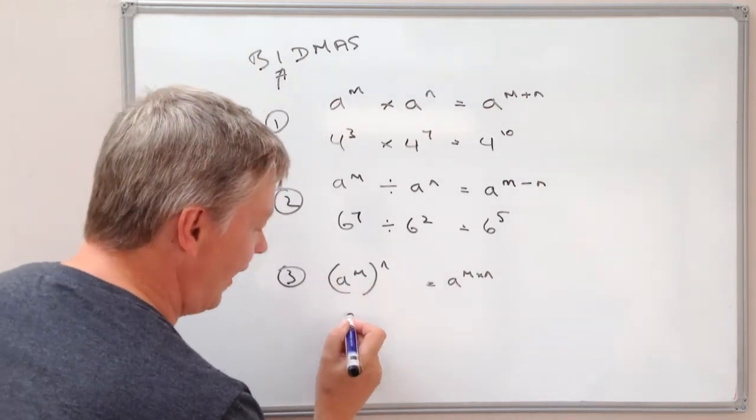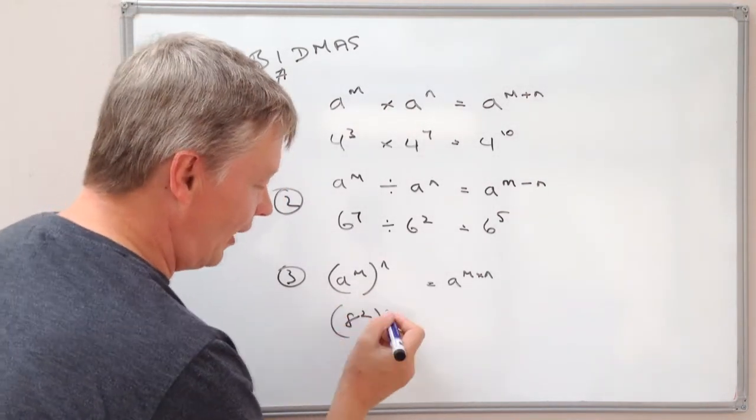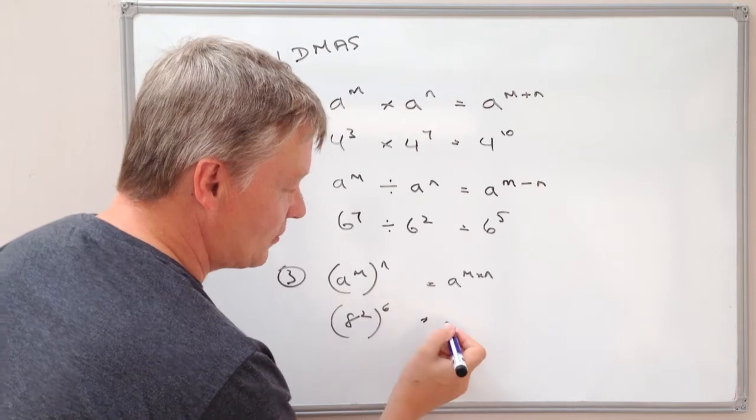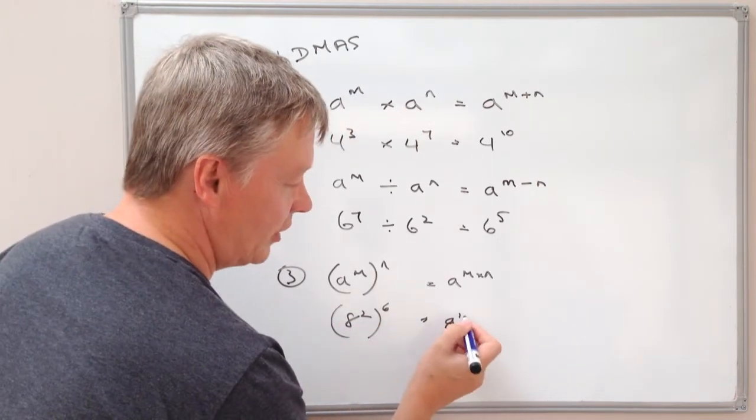It's going to be something like 8 to the power of 2, or 8 squared, if you like, all in brackets, to the power of 6. Well that's going to be 8 to the power of 2 times 6, which is 12.